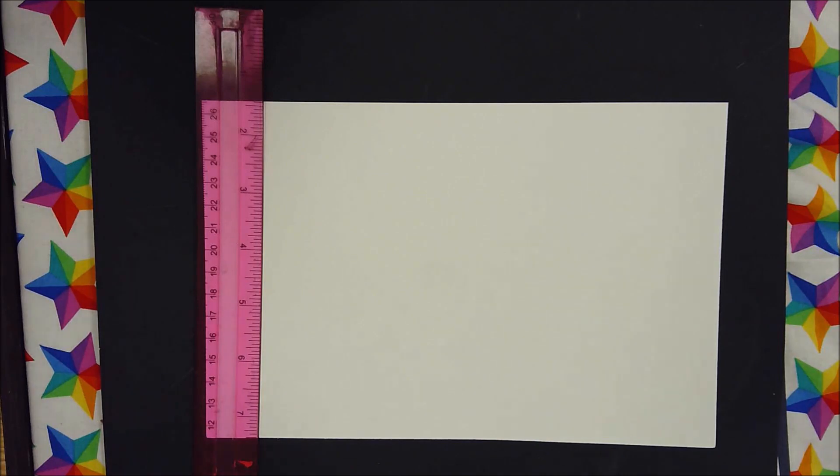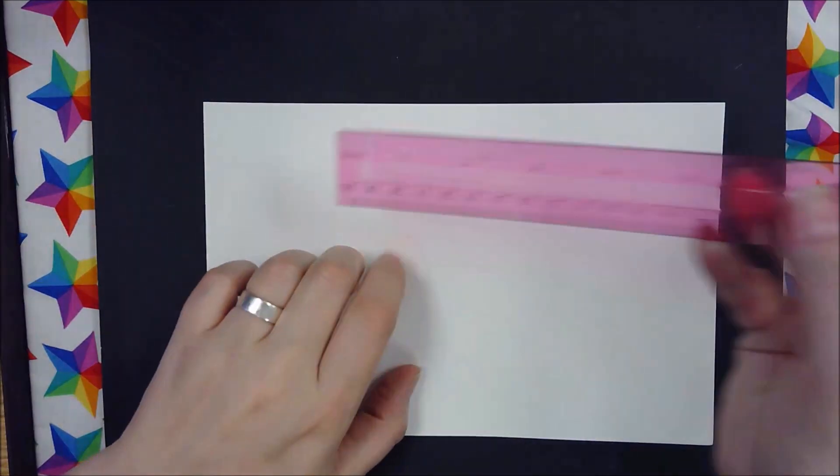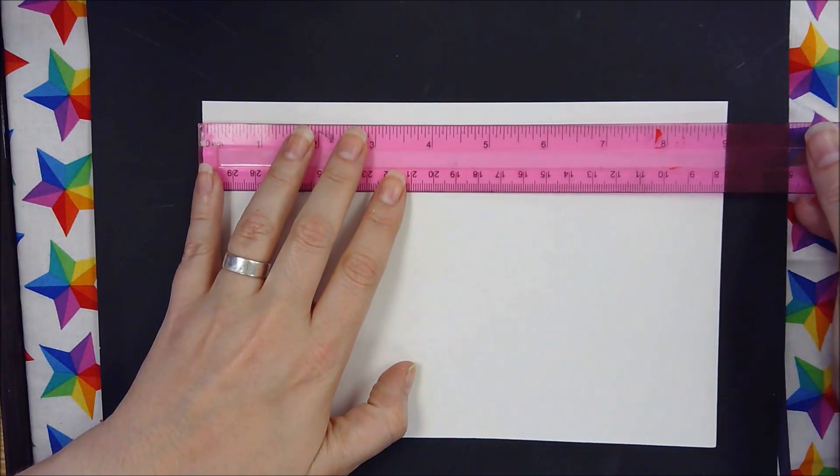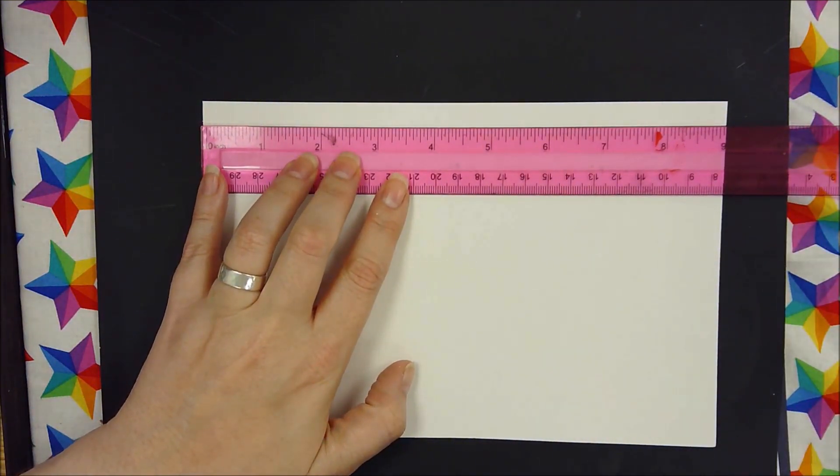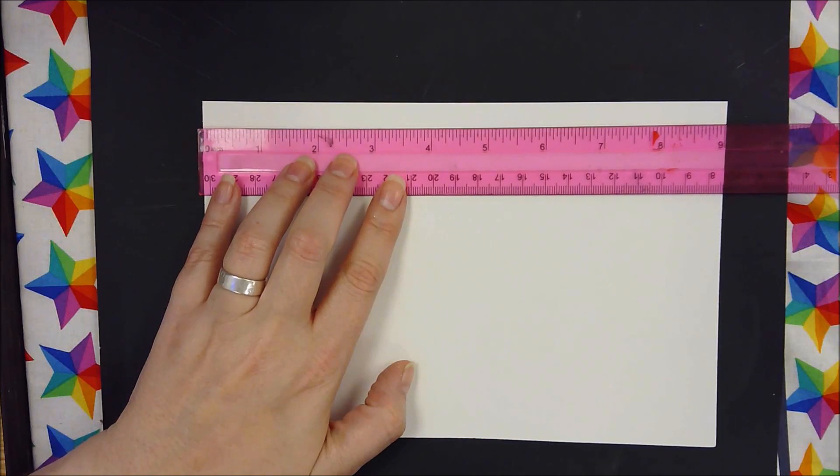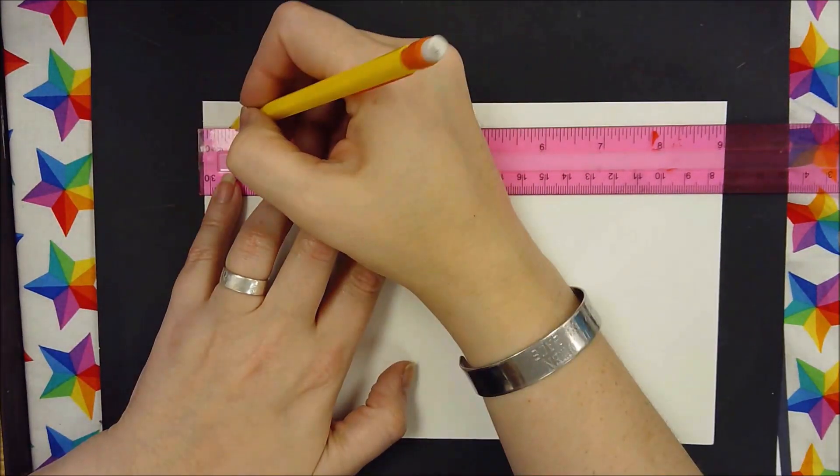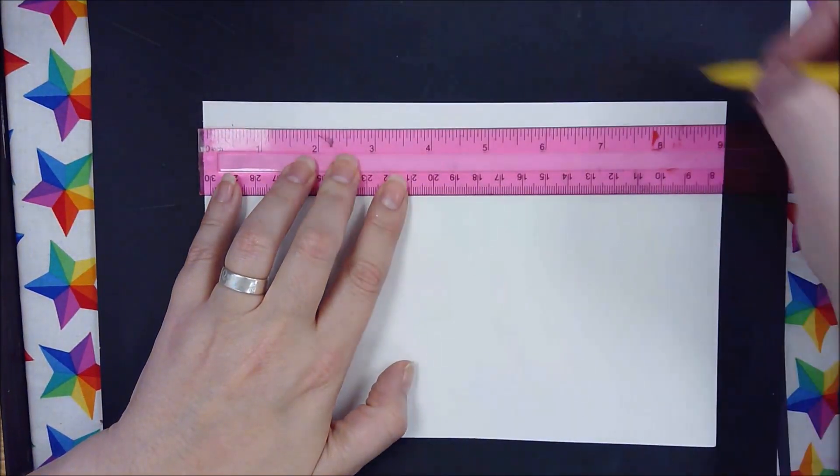For our first step, we need to add a border to our paper. Lay your ruler down so that zero touches the edge and nine is at the other side. Place a small dot at a half an inch and at eight and a half inches.